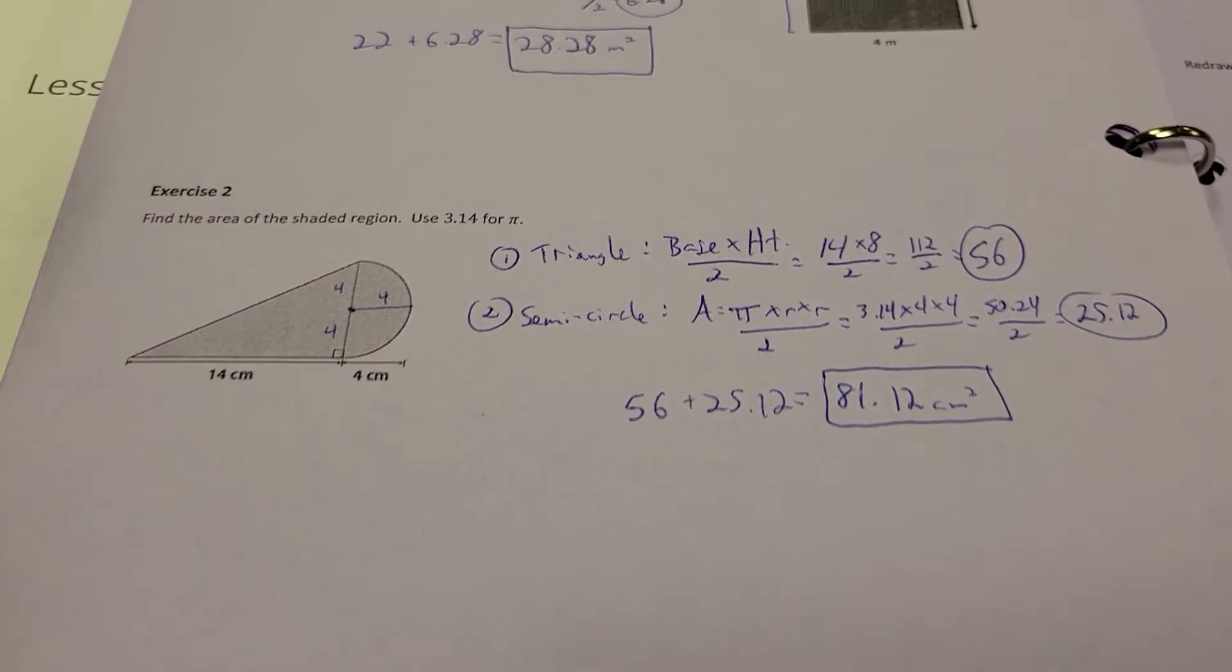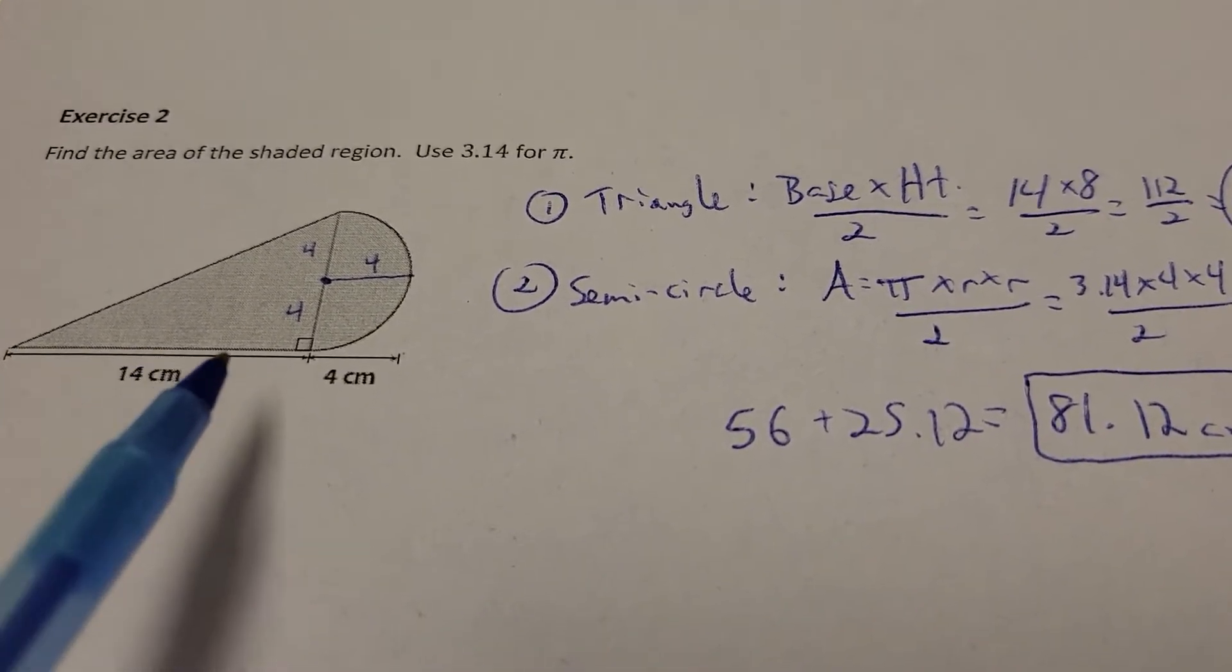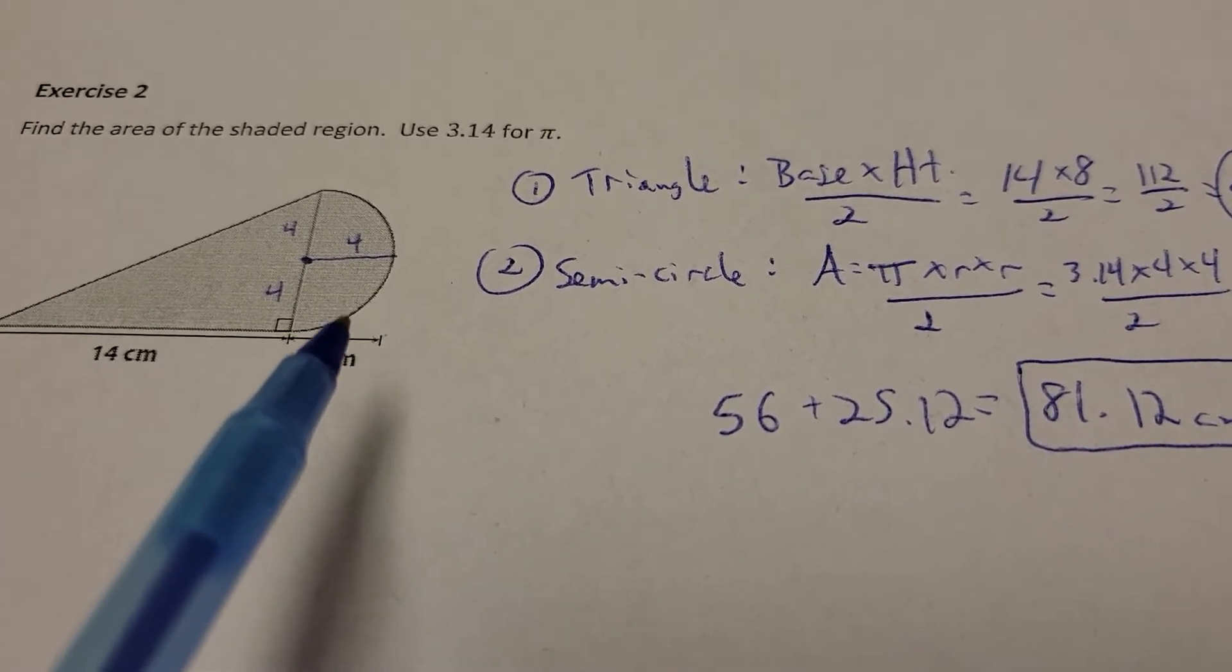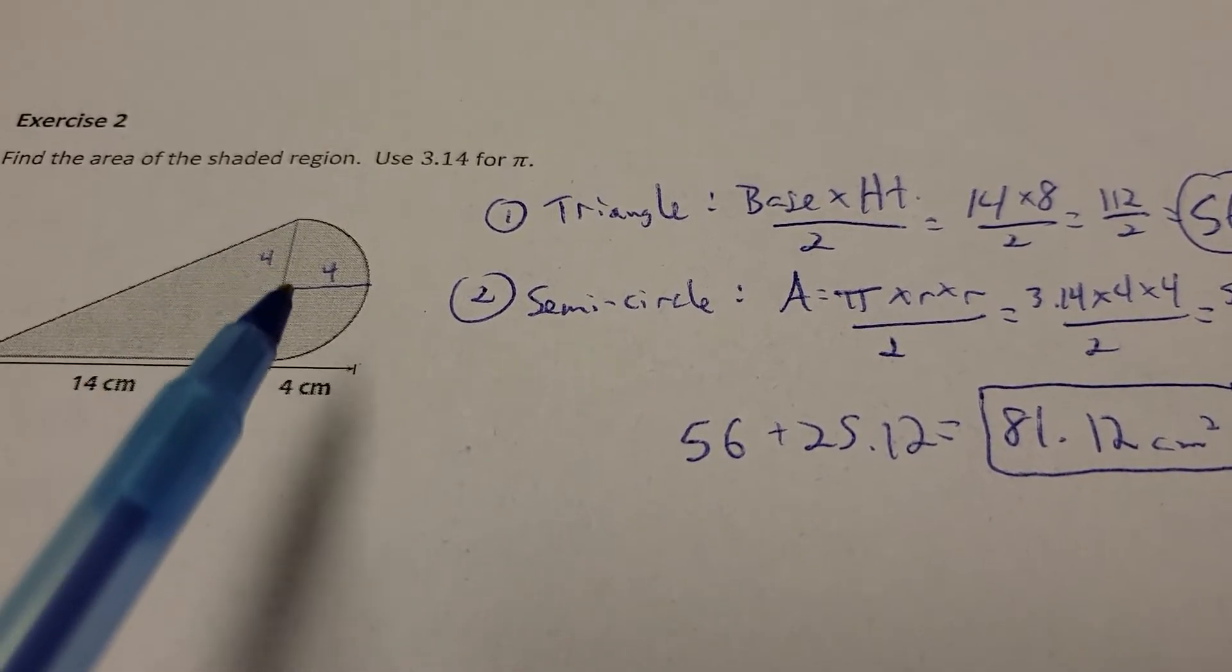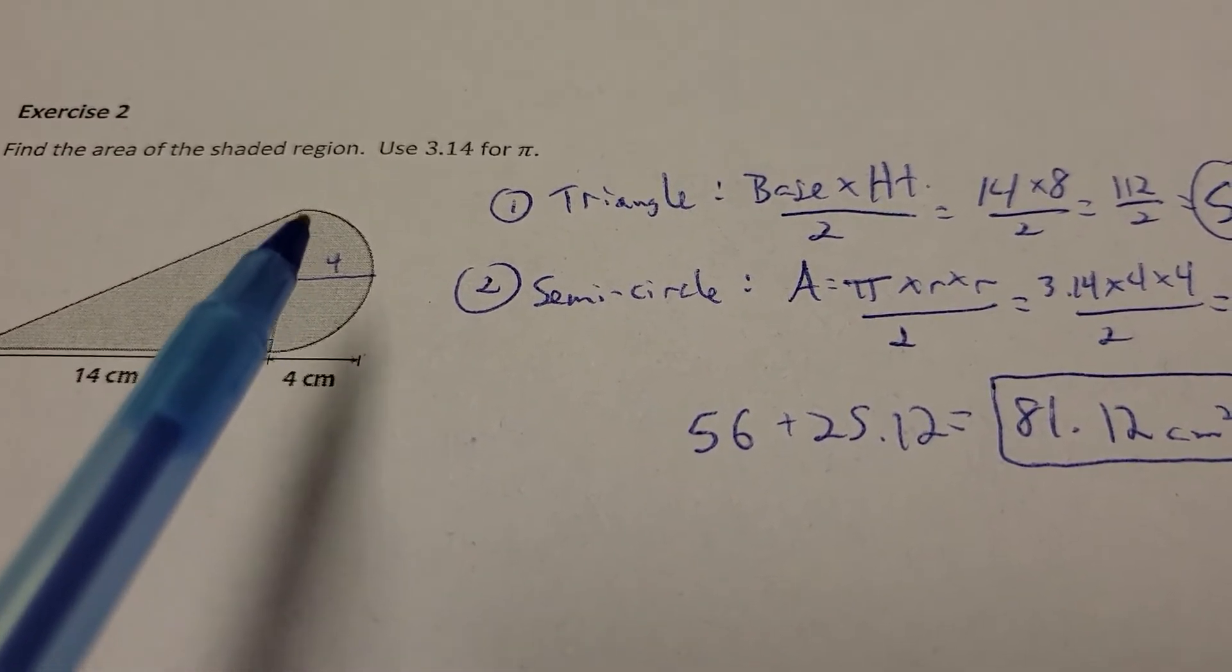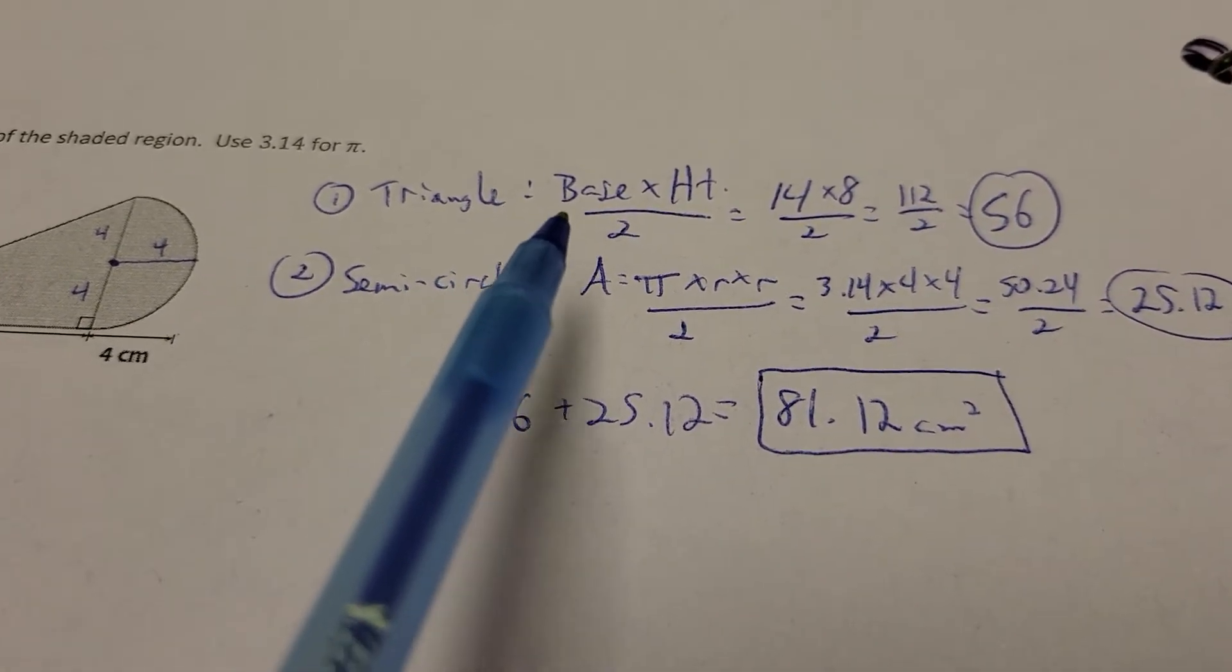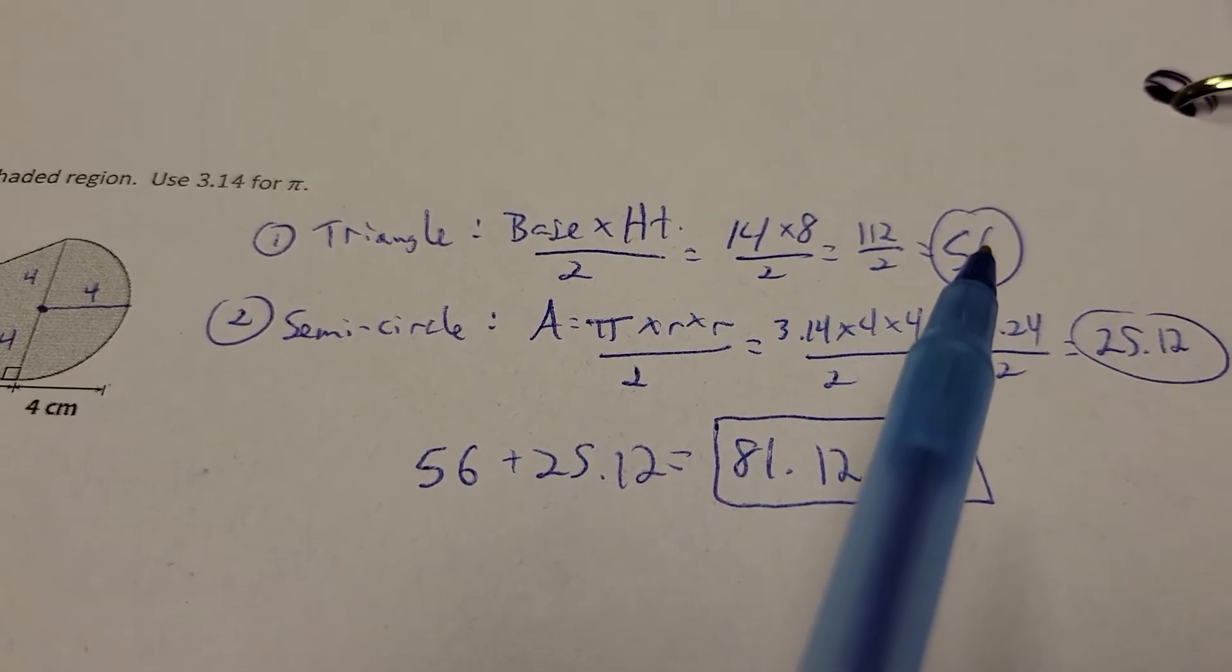Alright, next one, we have, this is kind of a tipped over ice cream cone almost. You have 14 here, and this measurement is 4, which means this measurement is also 4. That's also a radius. So from here to here is 4, and from here to here is 4. So that means now I know that the height of this triangle is going to be 8. So base times height divided by 2, that's the area of a triangle. 14 times 8 divided by 2 gives me 56.